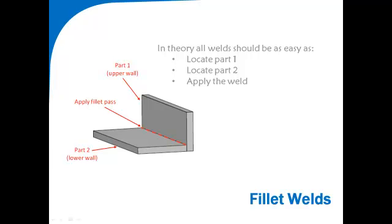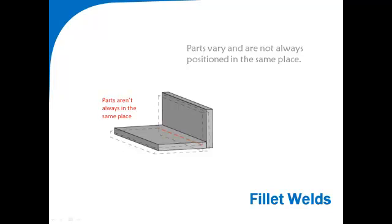A fillet weld is the most common joint type. Locating the upper and lower walls, or parts, allows us to determine the optimal location of the weld seam. Parts aren't always consistent in quality, or presented in the same location, making it difficult to locate the weld seam.